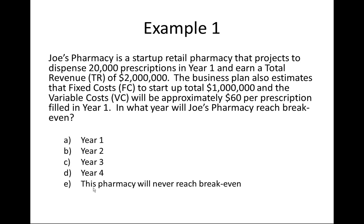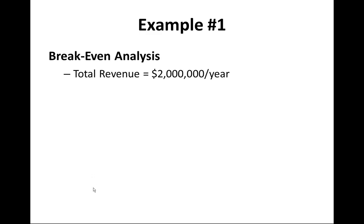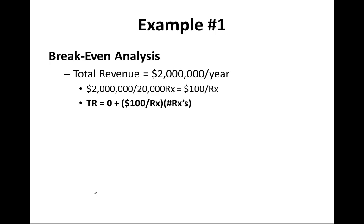Let's take the variables and break it down. Total revenue is estimated from year one data at $2 million per year. We know it takes about 20,000 prescriptions to reach that $2 million mark. So $2 million divided by 20,000 prescriptions gives you about $100 of revenue per prescription. Your total revenue equation starts at zero — $100 per prescription multiplied by the number of prescriptions equals your total overall revenue over time.